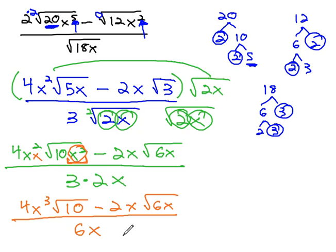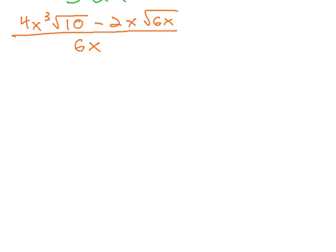So we've done two things so far. We simplified the radicals, then we rationalized the denominator by multiplying by root 2x. We're not done yet though, because we can still simplify that fraction by reducing.